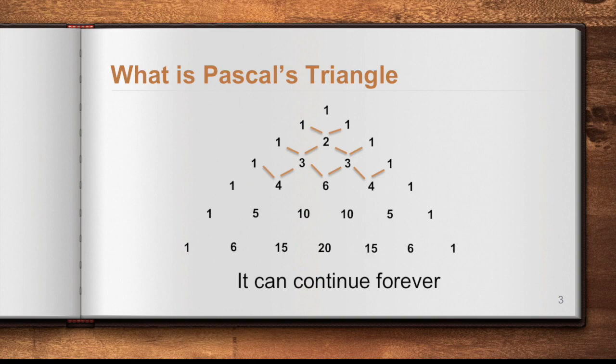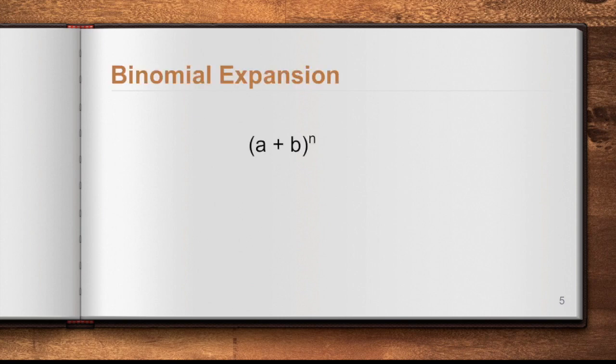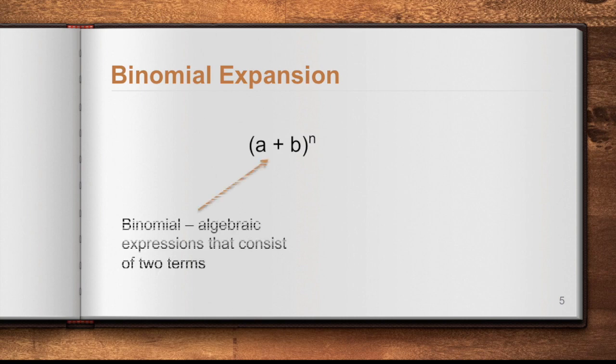Now, what is Pascal's Triangle for? Pascal's Triangle can help us in doing binomial expansion in the form of (a + b) to the power of n. Binomial means the expression consists of two terms — a as the first term and b as the second term — from the prefix 'bi' which means two. This is what we call a binomial.